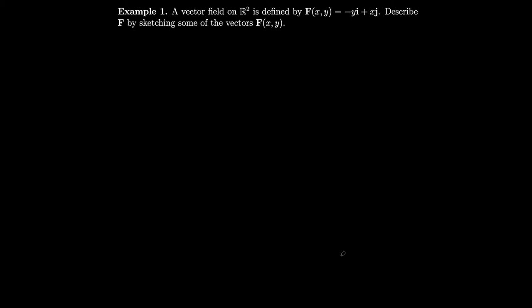Let's do an example. We have a vector field in R2 defined by F(x, y) = -yi + xj. We'll describe F by sketching some of the vectors. Let's make a table with the point (x, y) and the corresponding vector. For the point (1, 0): the first component is minus the y value, which is -0 = 0, and the j component is the x value, which is 1. So we get the vector (0, 1).